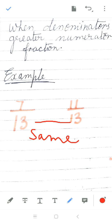Which is greater? 7 or 11? 11 is greater. So which is greater? This is greater. So 7 upon 13 is less than 11 upon 13. 11 upon 13 is greater.